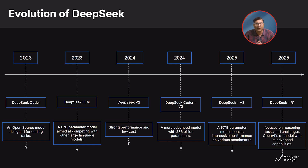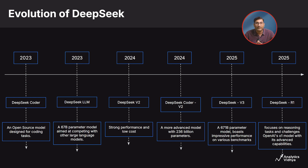Fast forward to 2025, we have DeepSeek version 3, a powerhouse with 677 billion parameters that boasts impressive performance across various benchmarks. And finally, we have DeepSeek R1, which focuses specifically on reasoning tasks and challenges OpenAI's O1 model with its advanced capabilities. It's fascinating to see how quickly this technology has evolved.